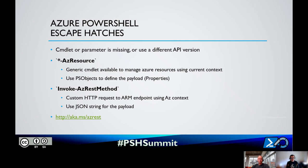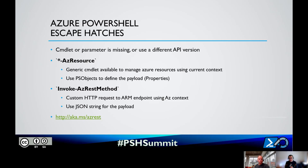The other is Invoke-AzRestMethod. Same idea - it uses the current context - but you build your HTTP request and the payload is a JSON string. You might prefer a PS object as a PowerShell user, but JSON is easier to read because if you do a query on the wire, you'll know what JSON is returned. You may see the REST API spec with a JSON definition of your payload. That's why we created Invoke-AzRestMethod. We have an article at aka.ms/azREST explaining how it works.